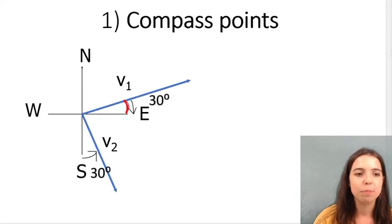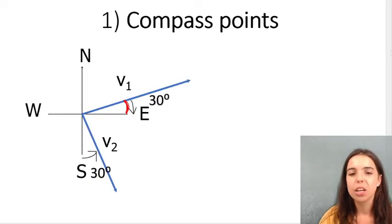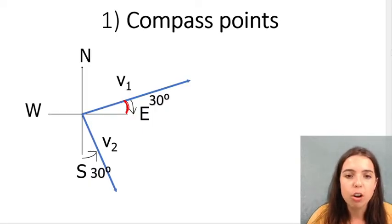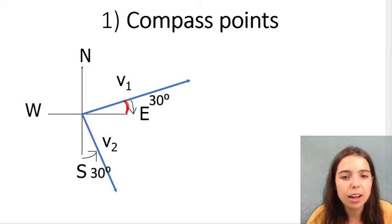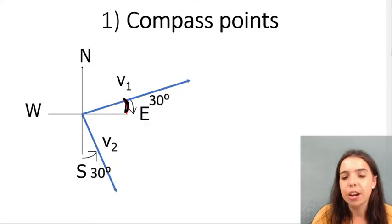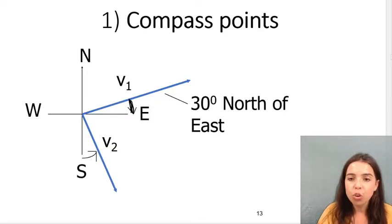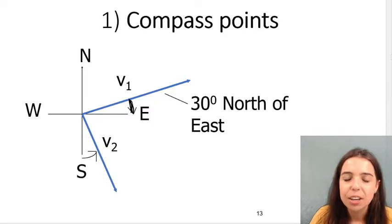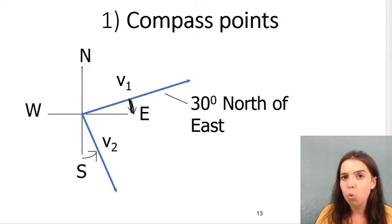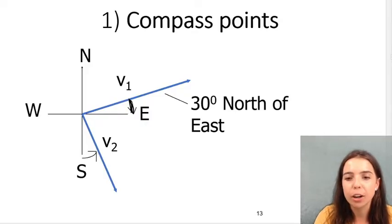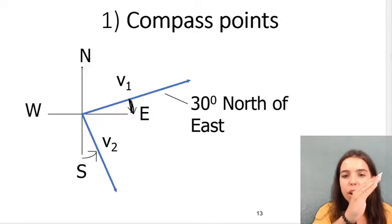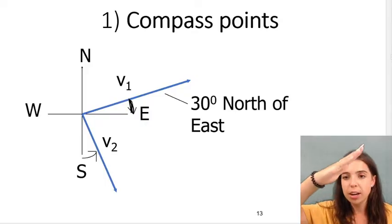Here's my first way: compass points. So in this example, I've got vector 1, which is pointing up and to the right, and you see here I give you an angle of 30 degrees. How would I state the direction of that vector? Well, that vector is 30 degrees north of east. Think about the blue line. Which way is the blue line going? We said the blue line is going up and to the right.